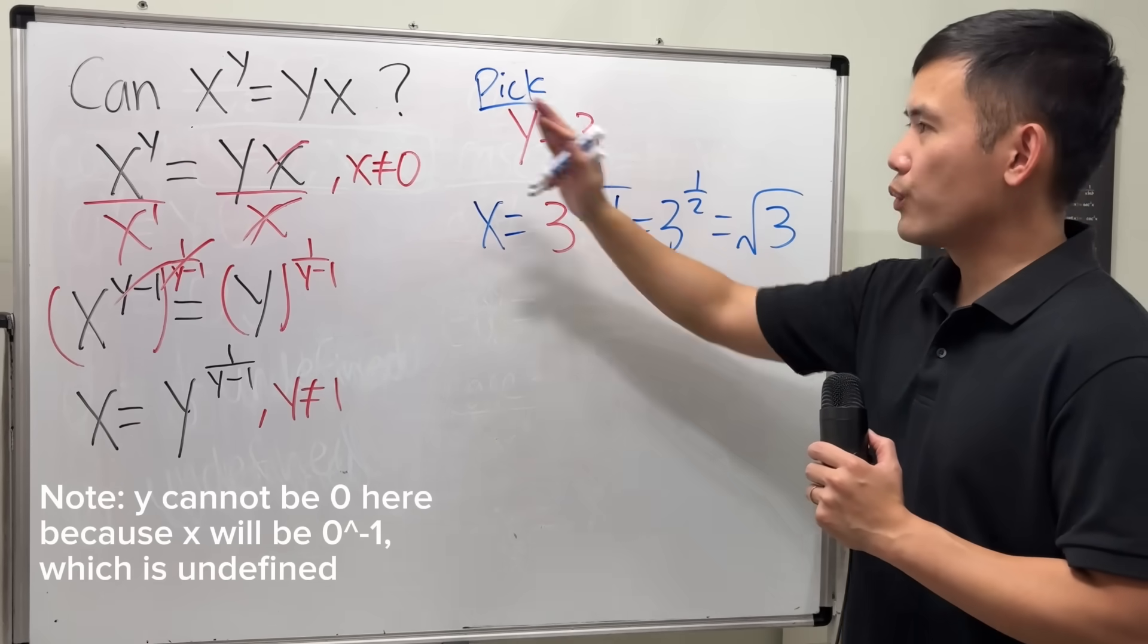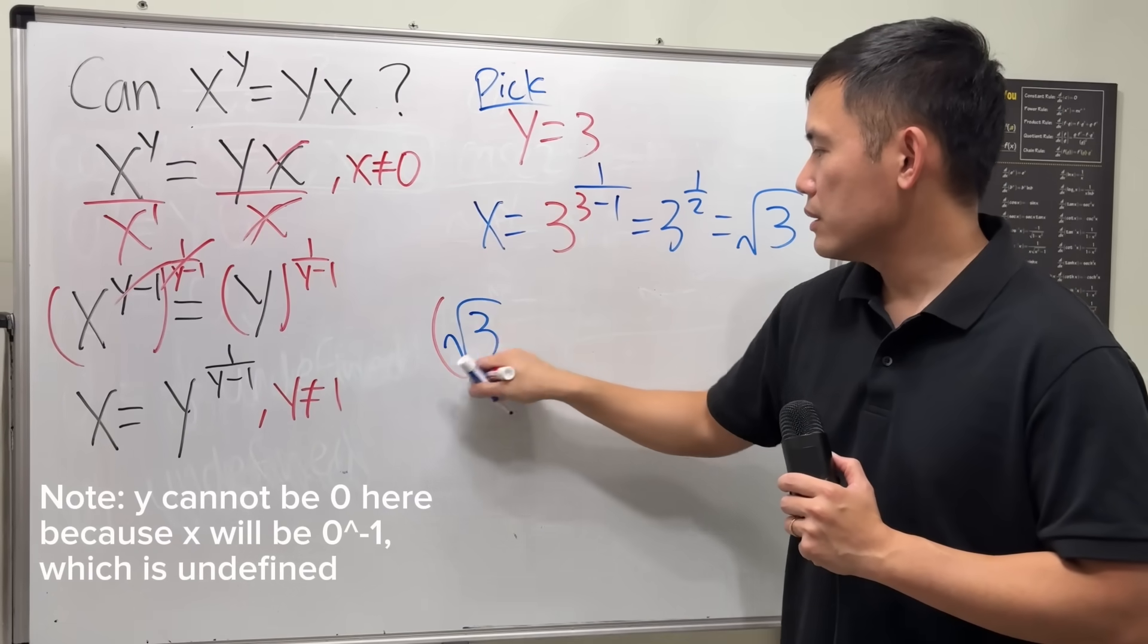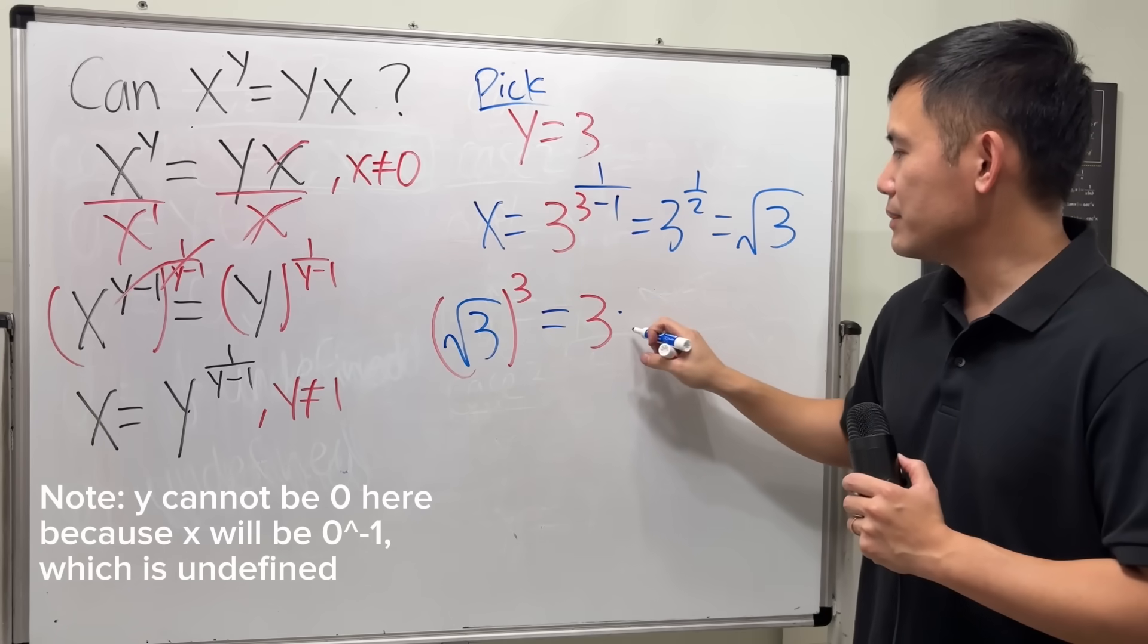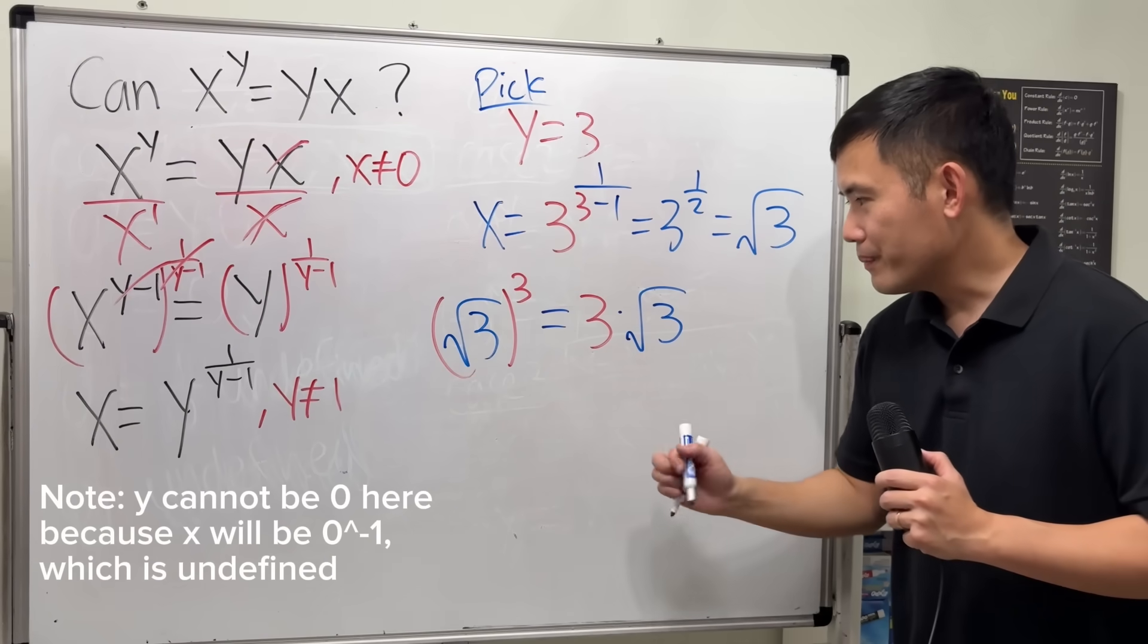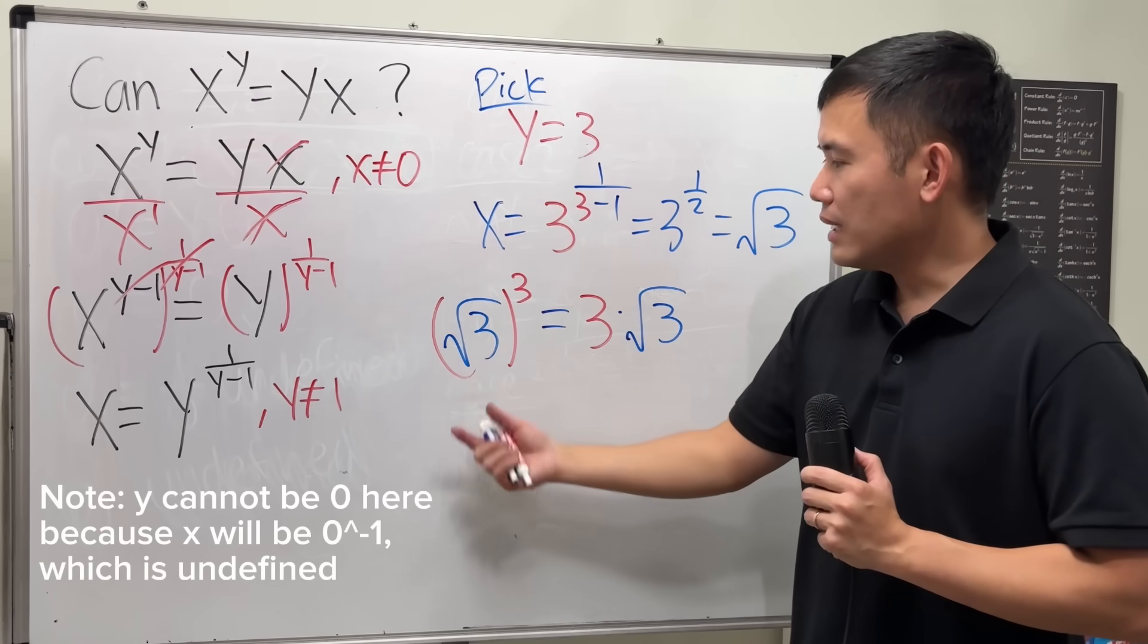Now, when x is equal to square root of 3, raise that to the y's power. Are we going to end that with 3 times the base, square root of 3? Well, this right here is pretty much done. So let's work this out. To work this out, you can write this back into the fractional exponent, or you can do the following.